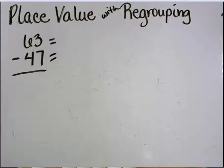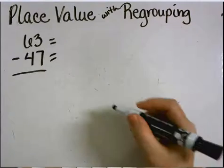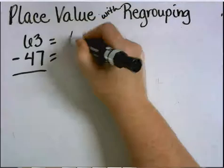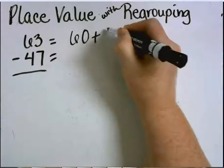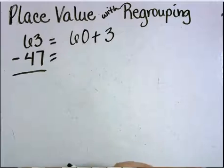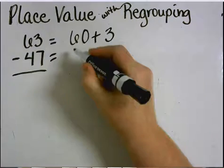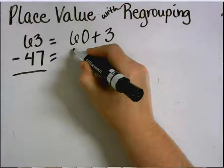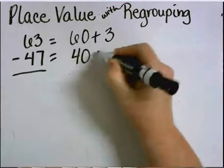The number 63 has 6 tens and 3 ones, or 60 and 3. The number 47 has 4 tens and 7 ones, or 40 and 7.